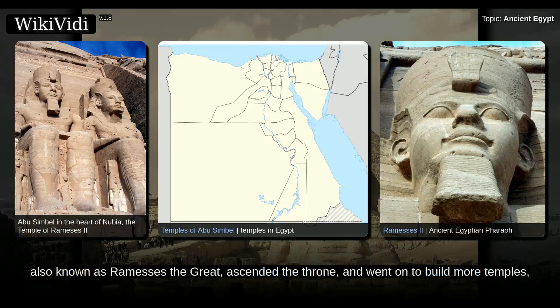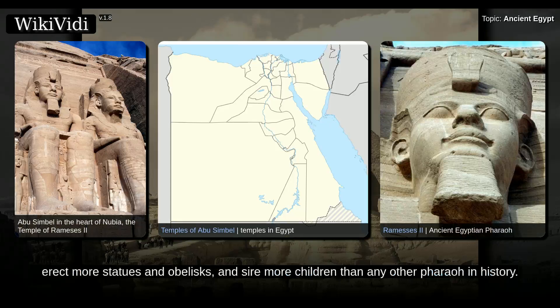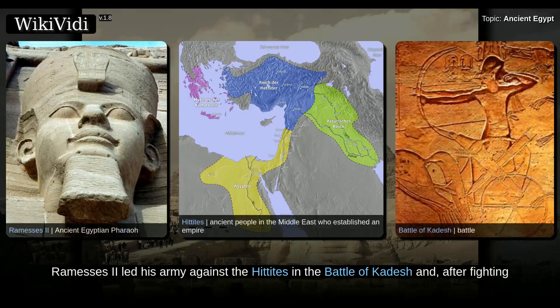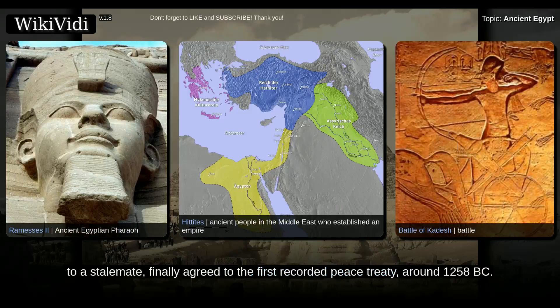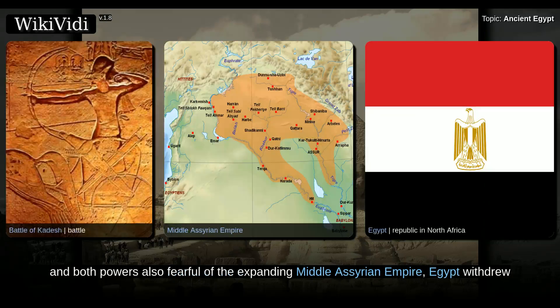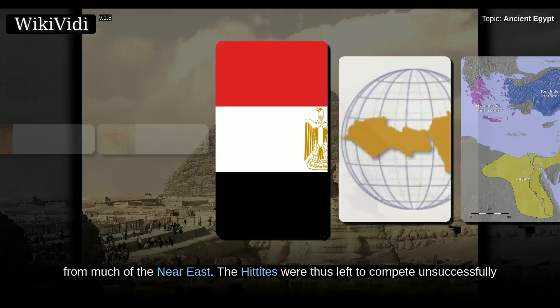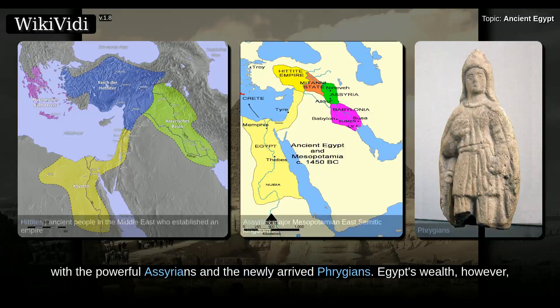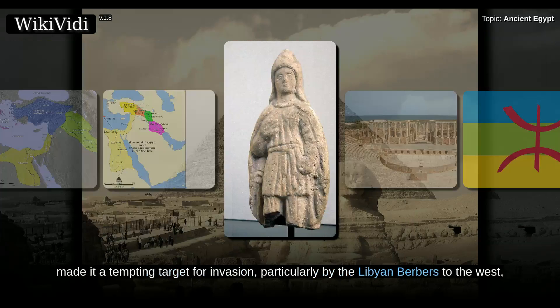Around 1279 BC, Ramesses II, also known as Ramesses the Great, ascended the throne and went on to build more temples, erect more statues and obelisks, and sire more children than any other pharaoh in history. A bold military leader, Ramesses II led his army against the Hittites in the Battle of Kadesh and, after fighting to a stalemate, finally agreed to the first recorded peace treaty, around 1258 BC. With both the Egyptians and Hittite Empire proving unable to gain the upper hand over one another, and both powers also fearful of the expanding Middle Assyrian Empire, Egypt withdrew from much of the Near East. The Hittites were thus left to compete unsuccessfully with the powerful Assyrians and the newly arrived Phrygians.